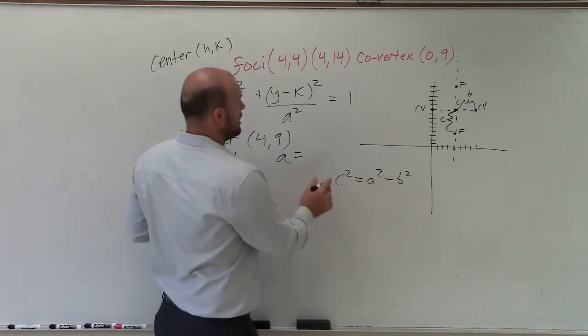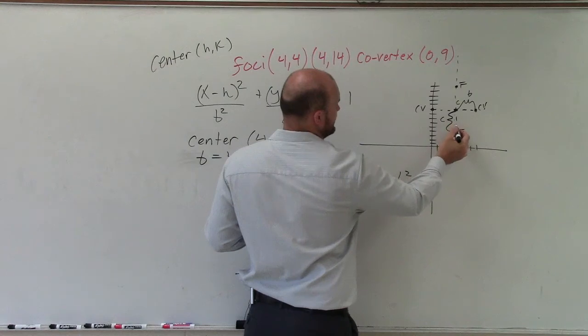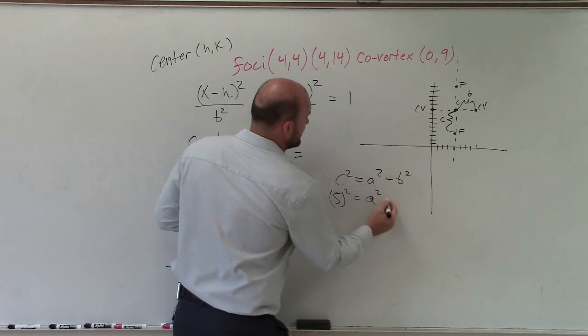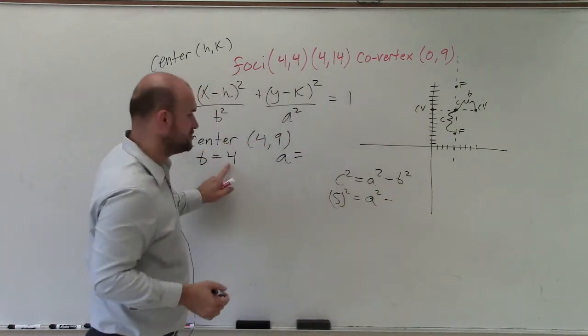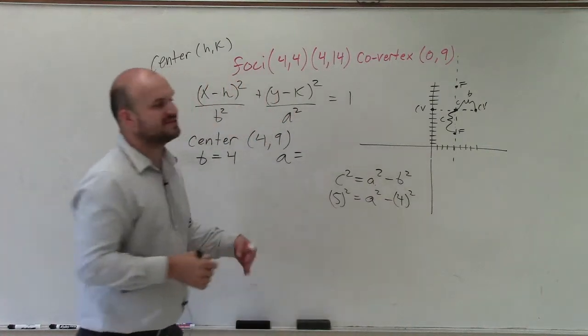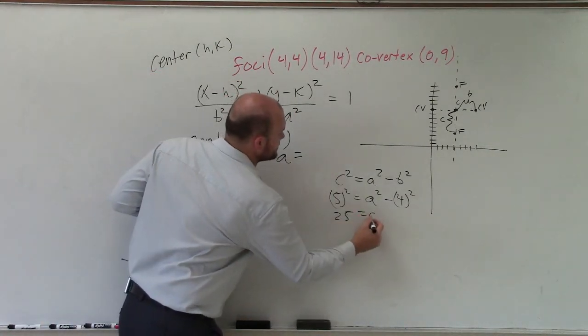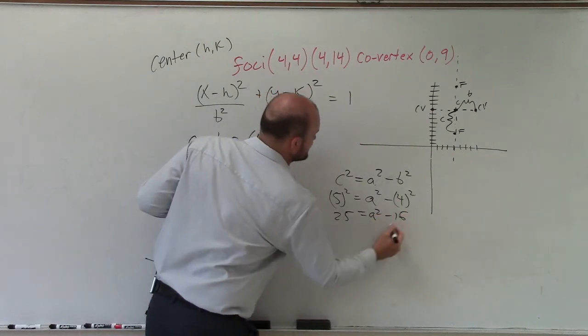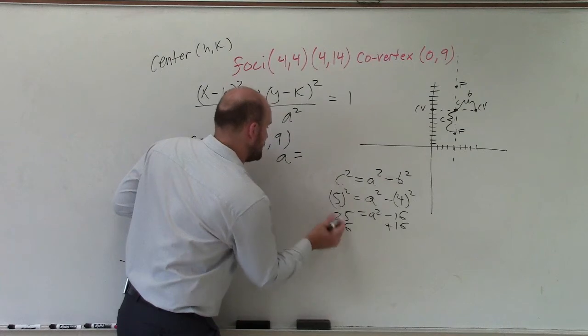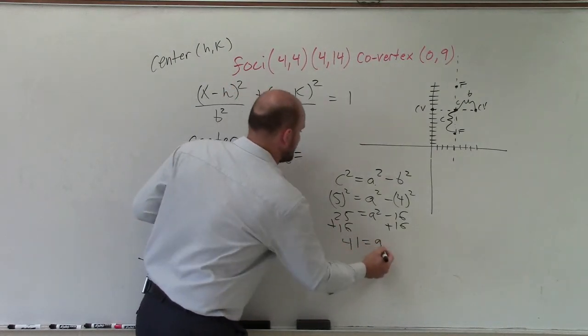So c squared, which we know is the distance from the center to the foci, which is 1, 2, 3, 4, 5. So I have 5 squared is equal to a squared, which we're trying to figure out, minus b squared, which would be 4 squared. Remember, c is the distance from the center to your foci, so that becomes 25 is equal to a squared minus 16. And I'll add 16, add 16, and I get 41 is equal to a squared.